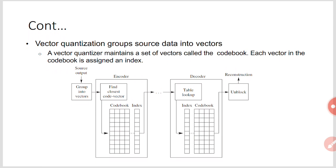Consider an example of image compression. In vector quantization based image compression, first the image is divided into non-overlapping sub-blocks, then each sub-block is converted into a one-dimensional vector. These vectors are called training vectors — you divide the image into non-overlapping sub-blocks and represent each sub-block by a vector. From these training vectors, a set of representative vectors are selected that represent the entire set of training vectors.